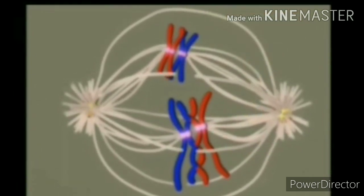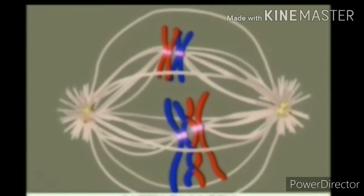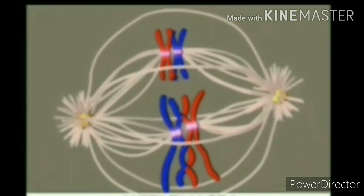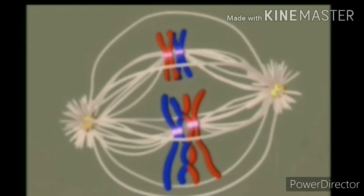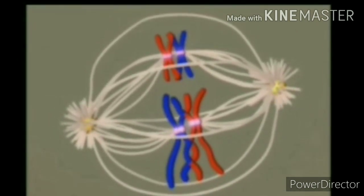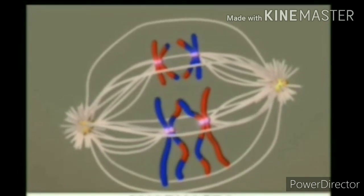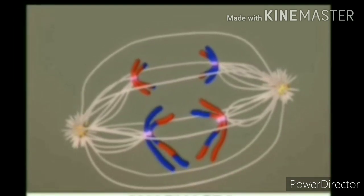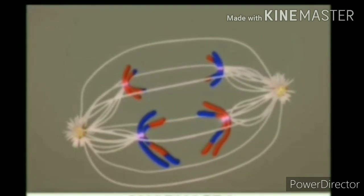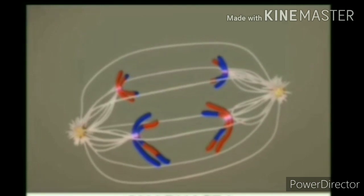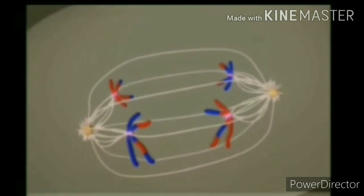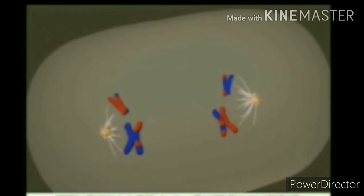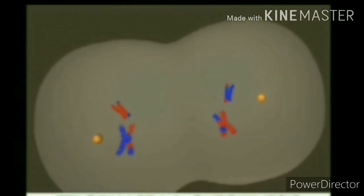In metaphase first, all chromosomes are randomly arranged on the equatorial line to develop different combinations in the future. During anaphase first, the homologous chromosomes separate and start to move to the opposite poles, and the sister chromatids remain attached with each other at the centromere. Finally, in telophase first and cytokinesis, the cell divides into two daughter cells, each of which undergoes meiosis second.